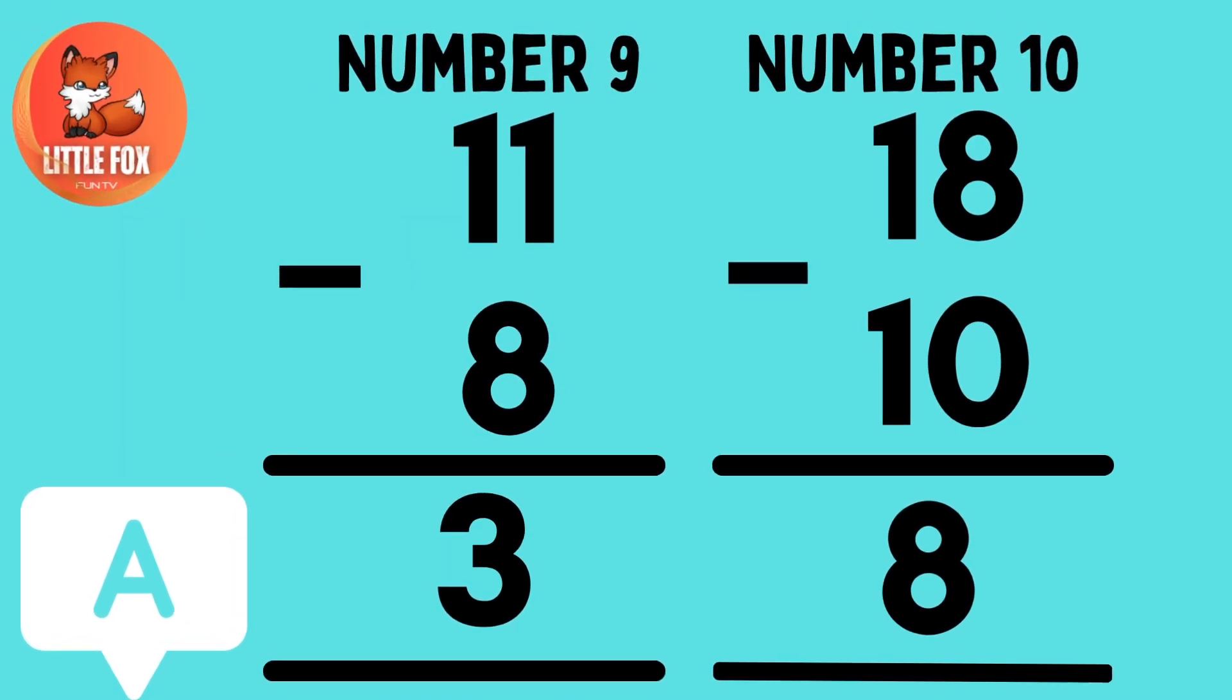Number 9. 11 minus 8 is equals to 3. Number 10. 18 minus 10 is equals to 8.